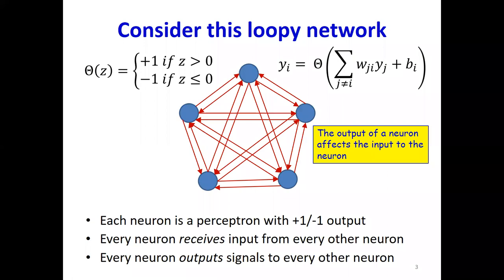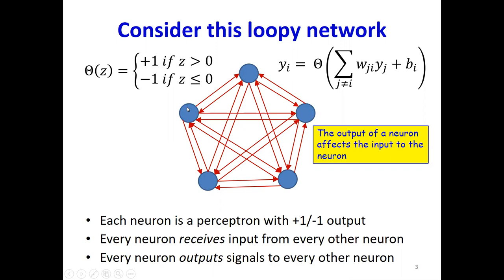Here is a cleaner representation. In this example, I have five neurons. The output of any neuron goes to every other neuron. So if you consider the neuron to the left that I'm pointing to with the mouse, once it operates on an input, its output goes to each of these other neurons. And their outputs in turn come back to this neuron. So you have these loops and the information sort of keeps ringing around in the network.